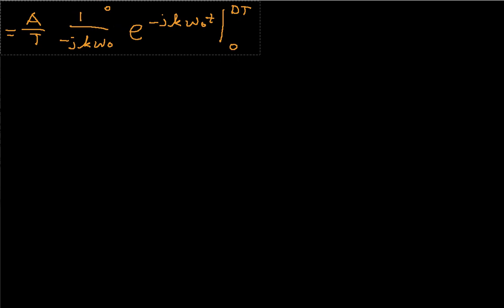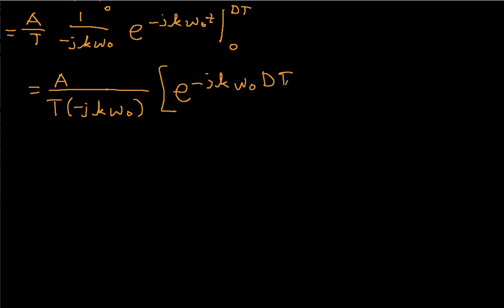So this is what we're working with then. We have that this would be equal to A over T times minus j k omega 0, and then e to the minus j k omega 0 DT minus e to the minus j k omega 0 times 0.